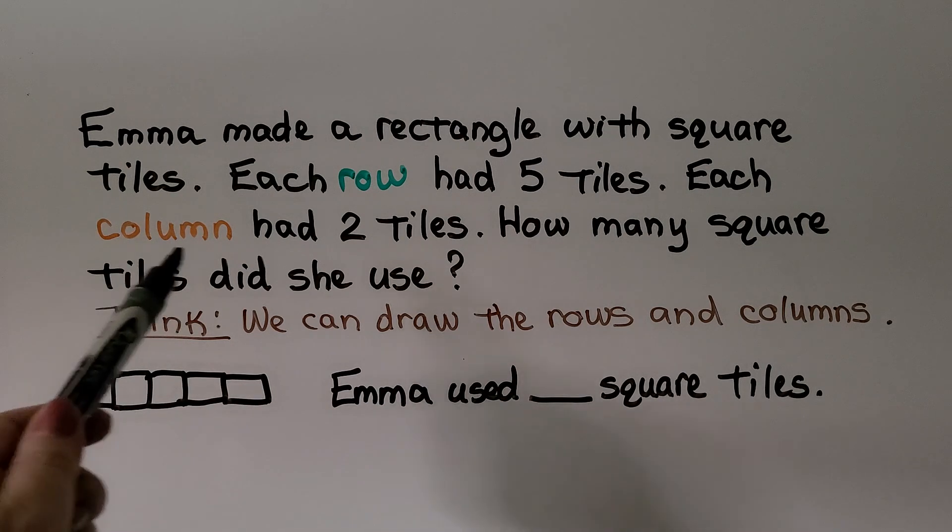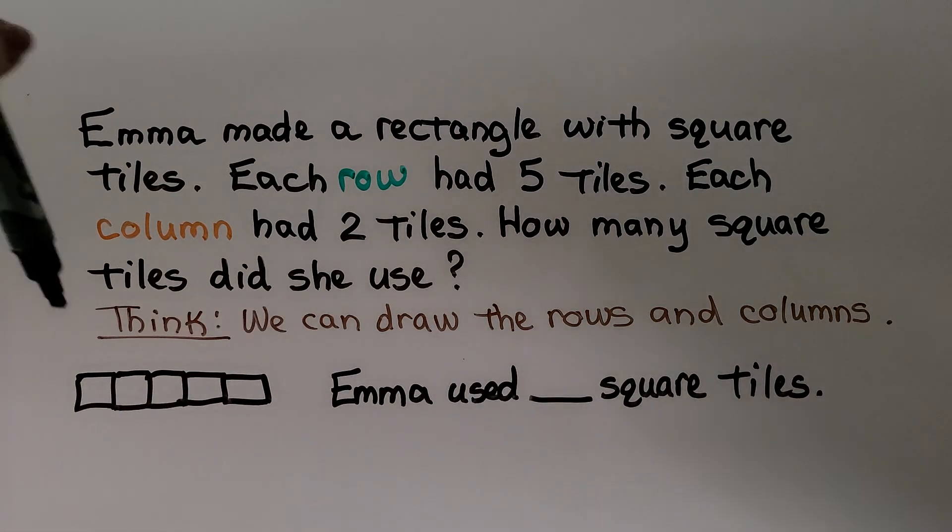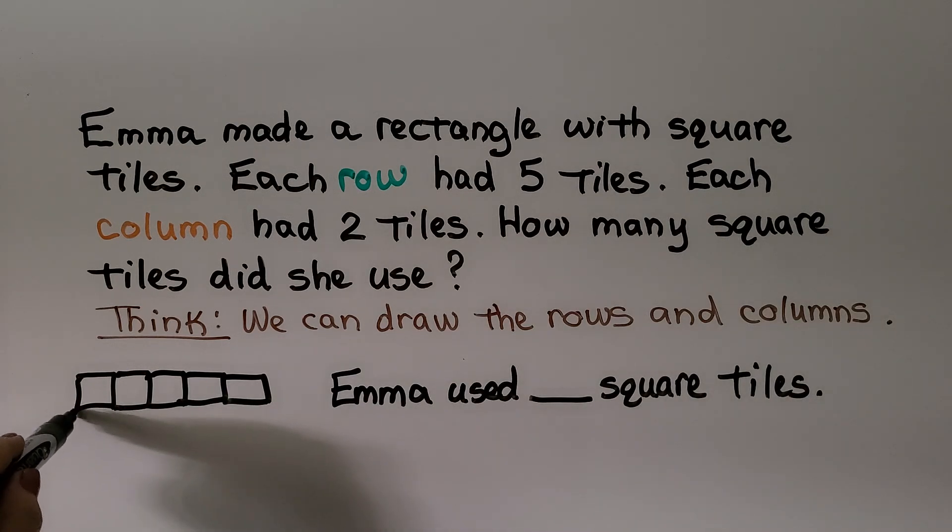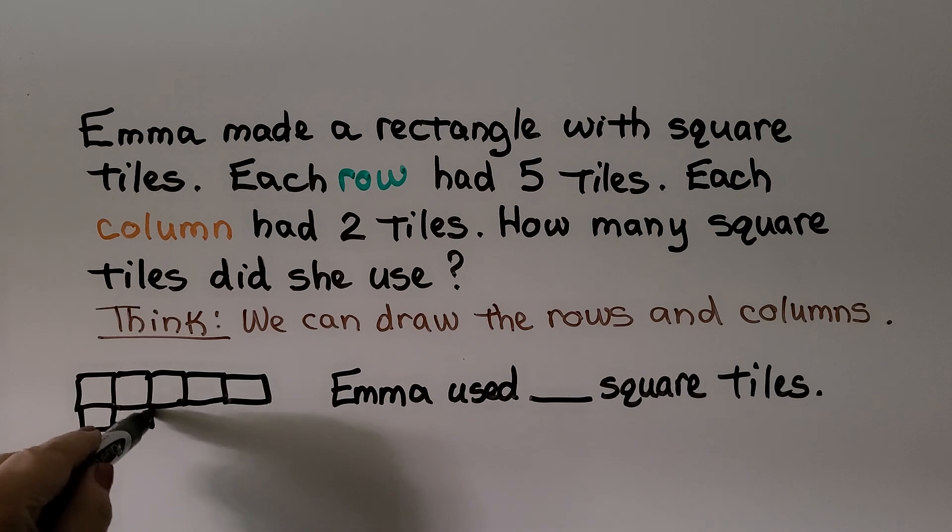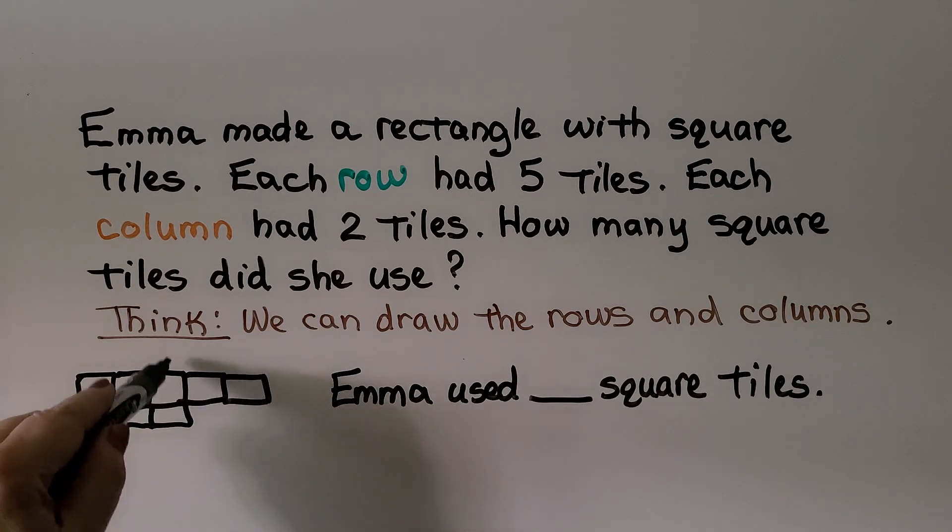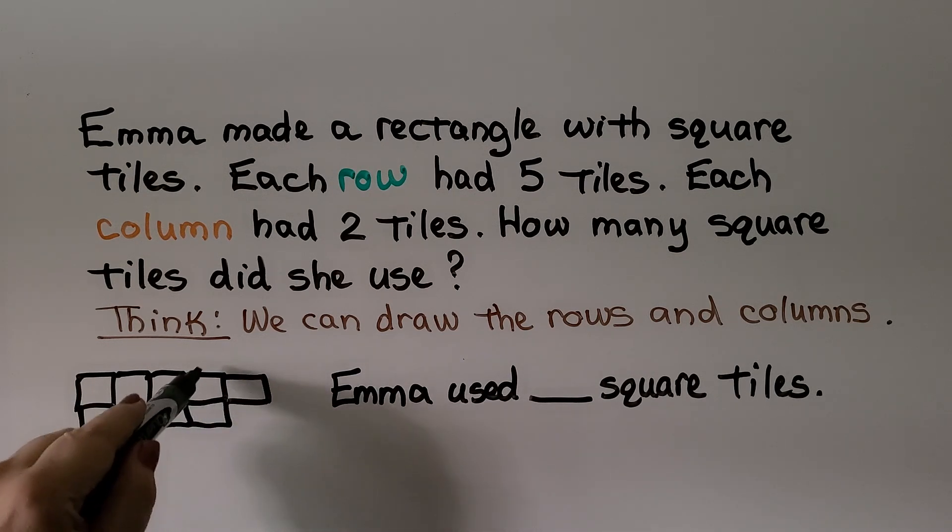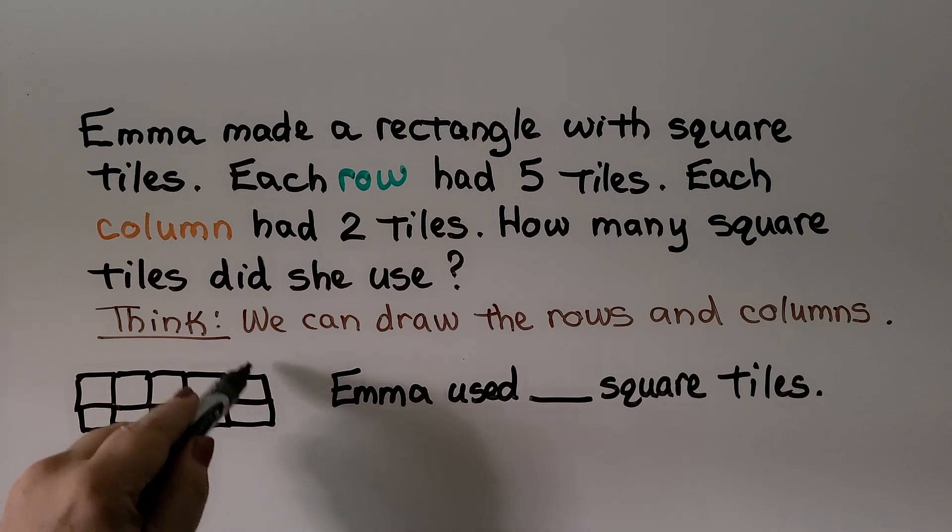And it says each column had 2 tiles. So that means coming down this way, there's 2. So that column has 2. That one has 2. That one has 2. That one has 2. And now that one has 2.